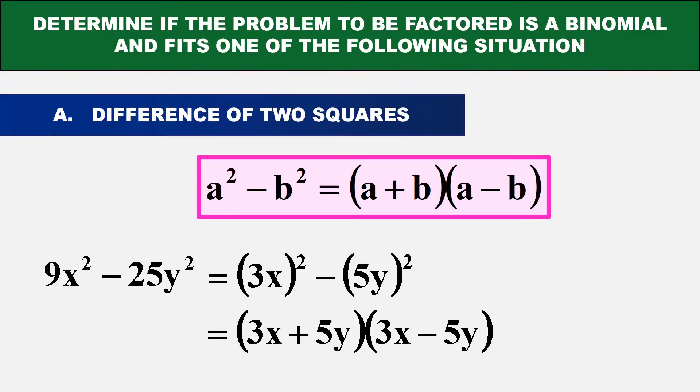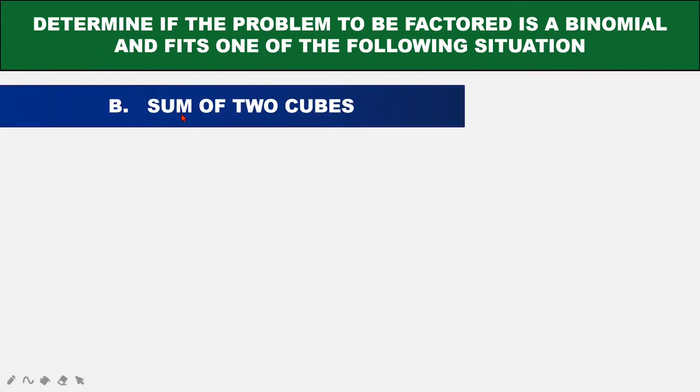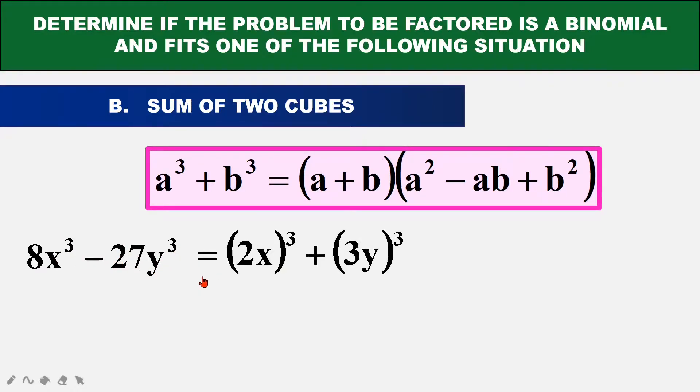Next thing is we have to determine if there is sum of 2 cubes. For example, if we have cases like this, 8X cubed minus 27Y cubed, we check whether they can perform in this type of formula. So if we can transform that, that will give us 2X cubed plus 3Y cubed.